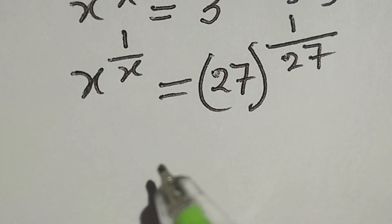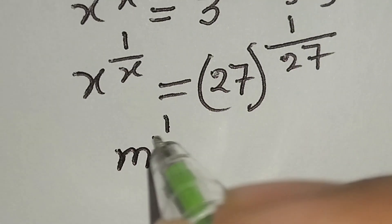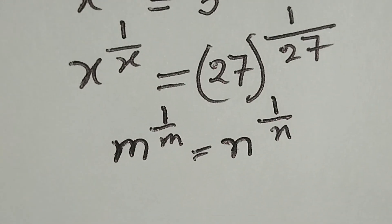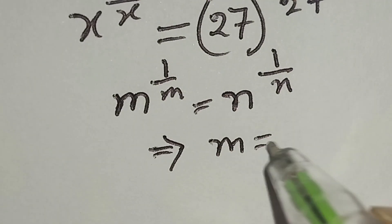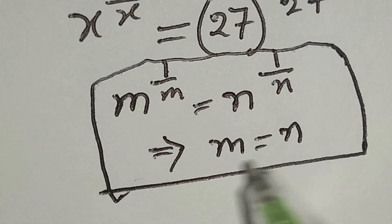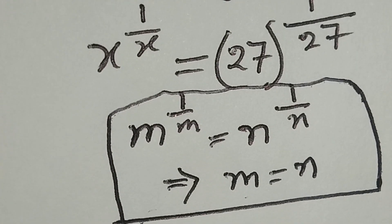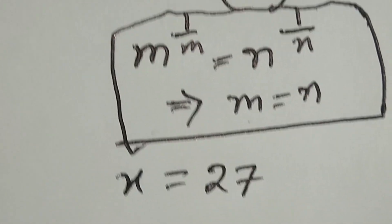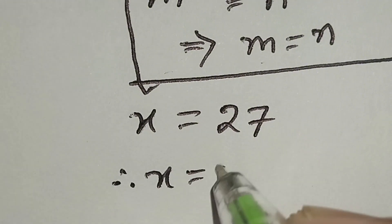We know a math formula: if m to the power 1 over m is equal to n to the power 1 over n, this implies that m is equal to n. According to this formula, we can write this line: x is equal to 27. So the value of x is equal to 27.